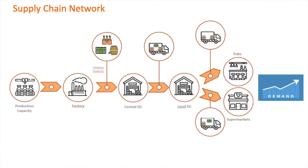Supply planning is the component of supply chain management involved with determining how to best fulfill the requirements created from the demand plan. Therefore, I will start by providing a brief explanation of demand planning in order to understand how supply planning works.